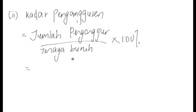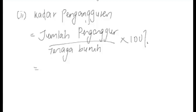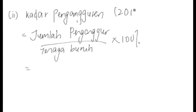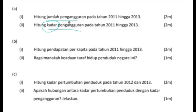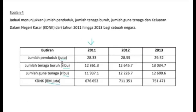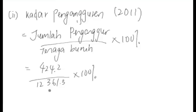Nanti kita akan masukkan data yang berkaitan ke dalam rumus ini. Inilah data dia. Katakan kita sekarang nak fokus untuk tahun 2011 dulu. Data dia untuk jumlah penganggur 424.2, lepas itu bahagi tenaga buruh. Tengok tenaga buruh bagi tahun 2011 dan masukkan data yang berkaitan. Jawapannya 3.43 peratus. Jadi untuk tahun yang seterusnya pun sama, kita juga akan sediakan jadual.